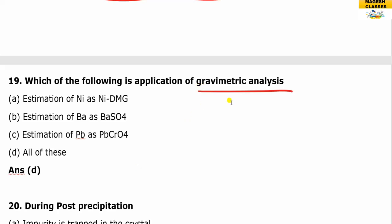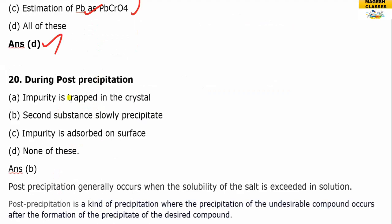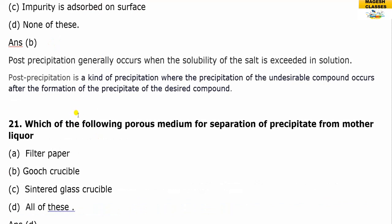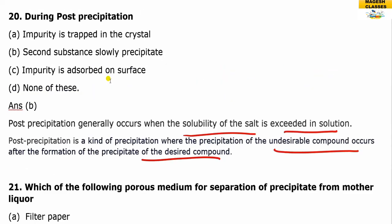Applications of gravimetric analysis include the estimation of nickel, barium, and lead. Post-precipitation occurs when the solubility of a salt is exceeded in solution, and an undesirable compound also precipitates along with the desired one.